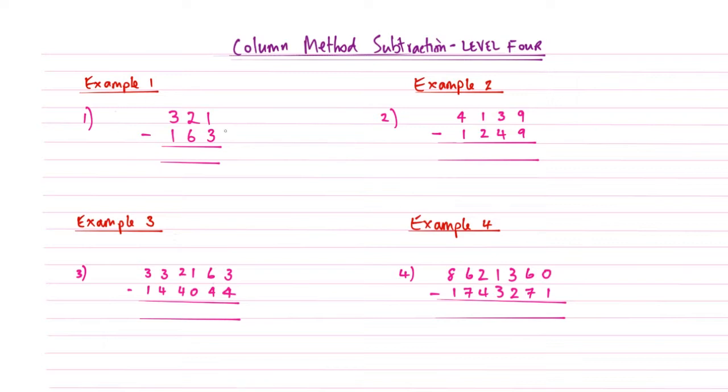So we're going to do example 1. As usual, we always check with Column Method Subtraction that the top number is bigger than the bottom, and if it isn't we have to borrow. So if we look at the units column on example number 1, this 1 obviously is smaller than 3 so we need to borrow. We're going to borrow from the number 2 so that reduces down to a 1, and then the 1 that we've taken lives next to the 1 there. 11 subtract 3, that's going to give me an answer of 8.